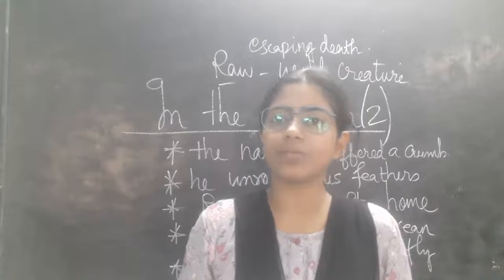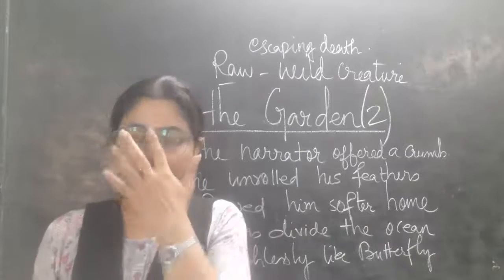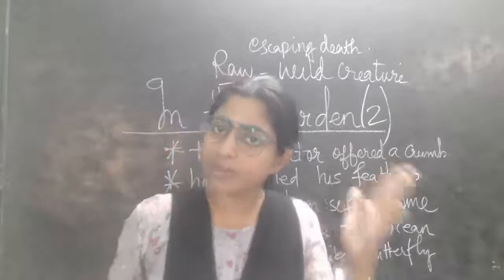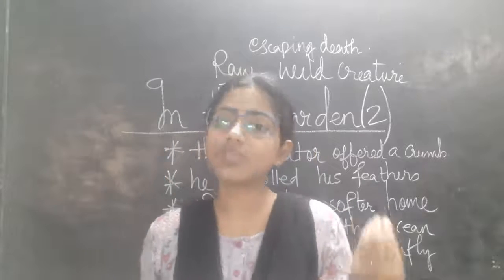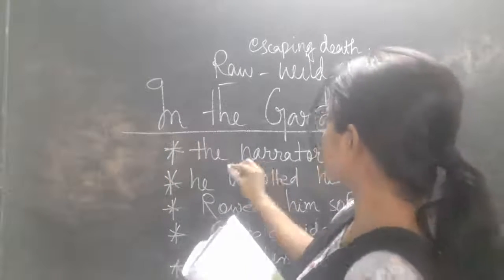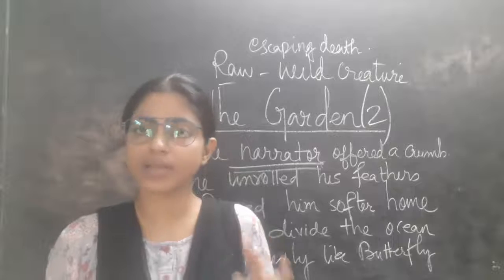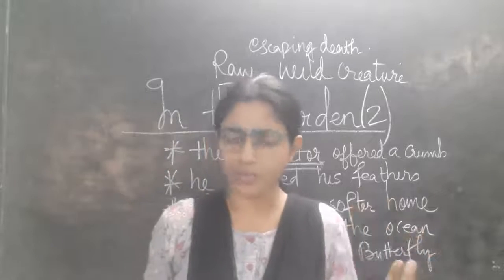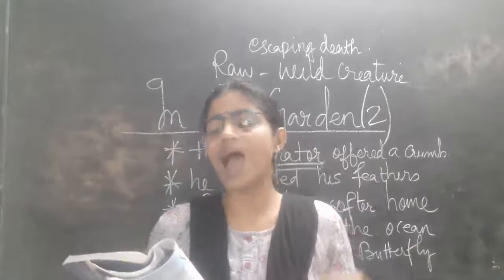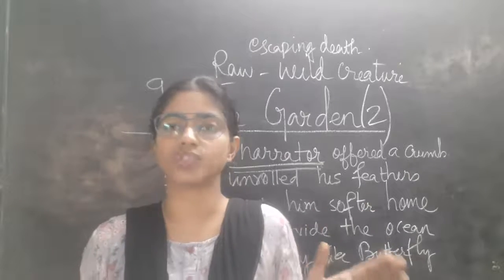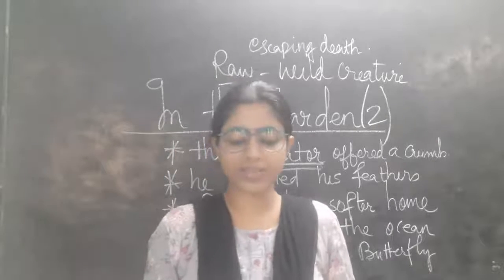Now we come to the next portion: 'like one in danger and cautious' — that is the bird who moved his velvet head. The narrator, referred to as 'I', offered the bird a crumb — a piece of cake or biscuit. The bird then unrolled his feathers in order to move, rolled in softer form, and then went back home.